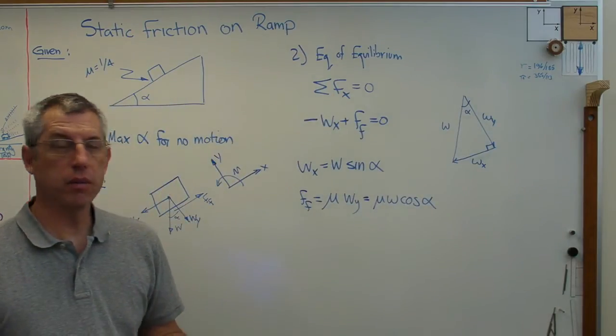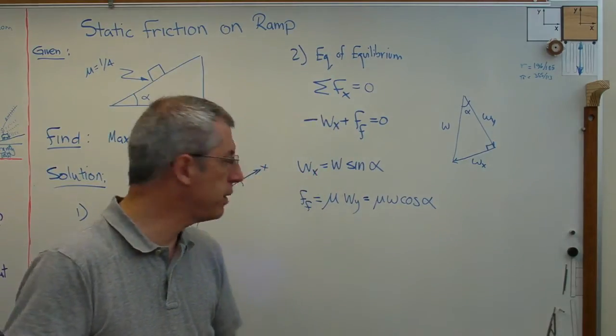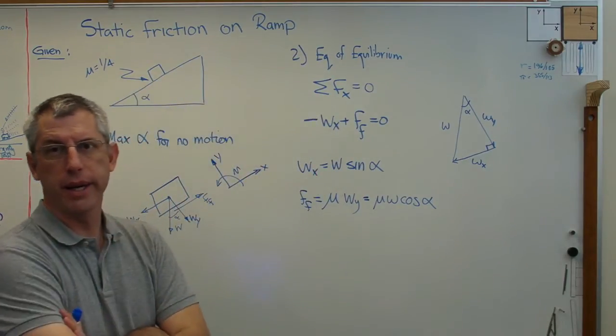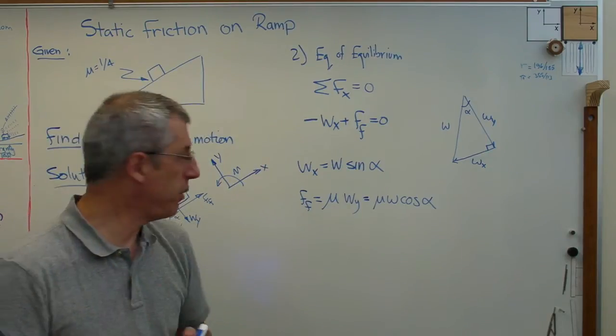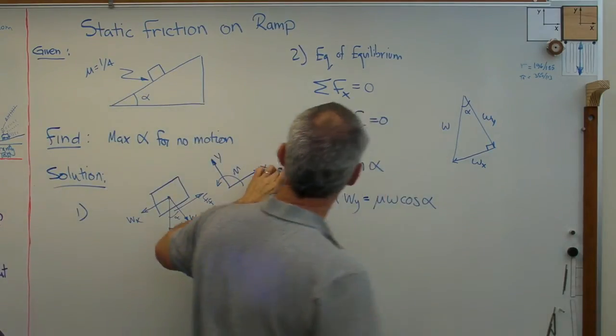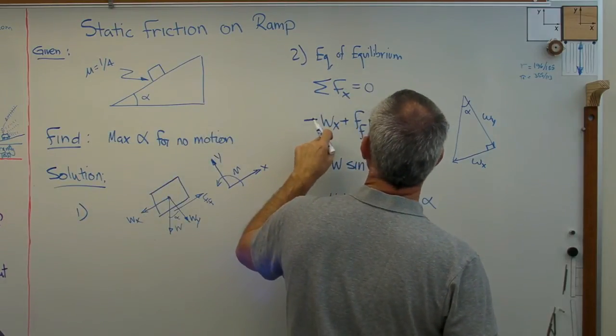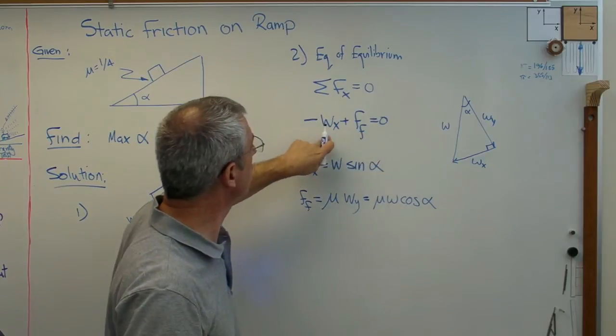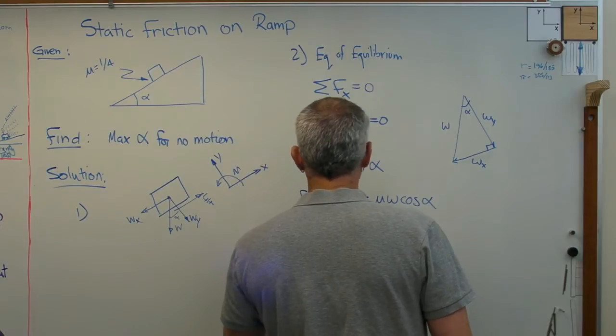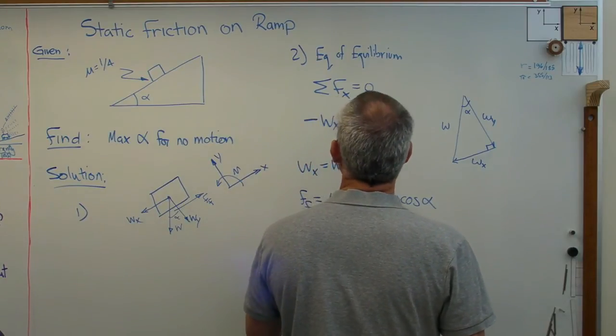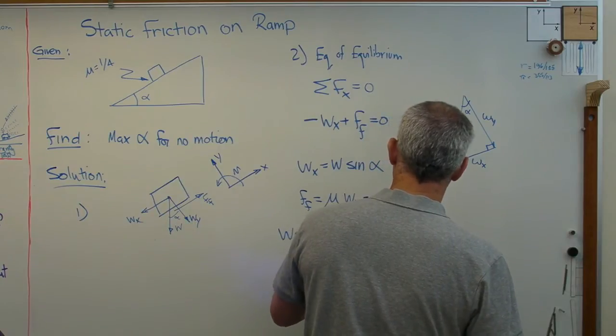So what I'm going to get here is mu W cosine alpha. All right. Well, I've got everything in terms of W and in terms of alpha. Only I don't know what W is. It's not given in the problem. Well, either I forgot, which I didn't, or you don't need it. And it turns out we don't need it. So let's plug these two expressions into there and see what happens.